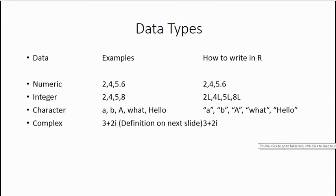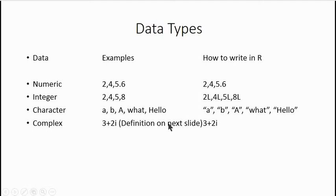Next we have complex data. As it is clear from the name, this data is complex — the definition is also complex. If you are not a mathematician, it will be very hard to understand what a complex number is. Complex is a number different from numeric and integer. It actually contains an imaginary number represented by i. In R, if you want to write a number as complex, you just need to type i with it, and it will be considered as complex data.